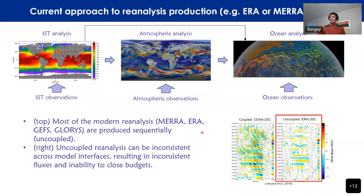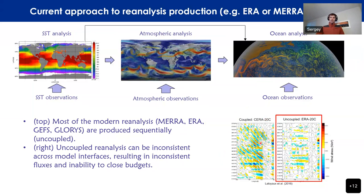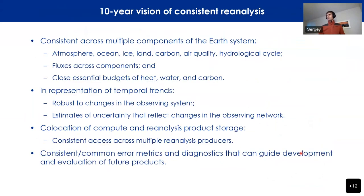As we look more into how the Earth system functions as a whole, we're realizing that the sequential or uncoupled way of doing things is really limiting. For example, in the tropics we have tropically coupled waves. In a coupled reanalysis, you can see propagation consistent with what you would observe, but uncoupled reanalysis cannot get this propagation right.